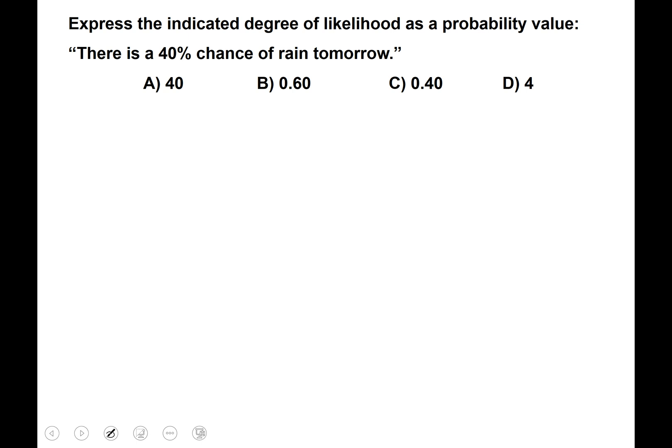All right let's start by seeing how much you know about probability already. Express the indicated degree of likelihood as a probability value. There is a 40% chance of rain tomorrow. As a probability do you think that would be expressed as A, B, C, or D?